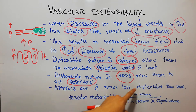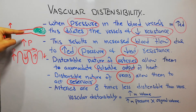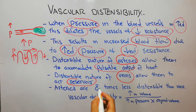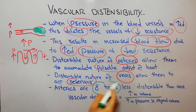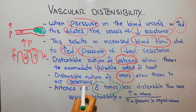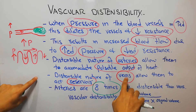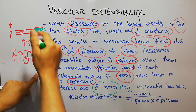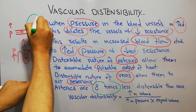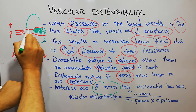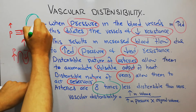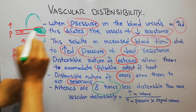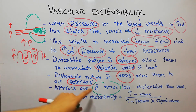Arteries are eight times less distensible than veins. The veins can act as a reservoir because they can dilate about eight times more than the arteries, allowing them to accumulate far more blood. So the distensible nature of the veins is about eight times that of the arteries.